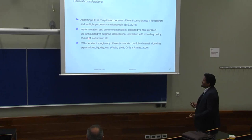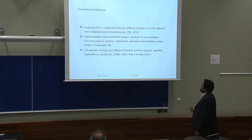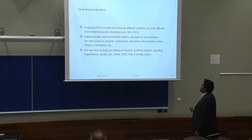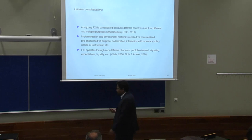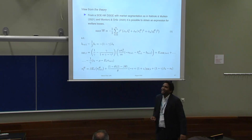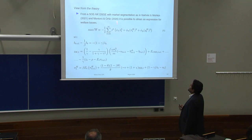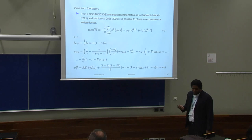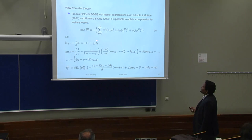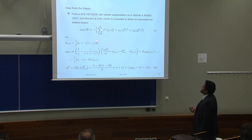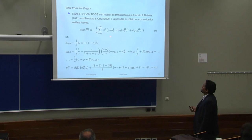Intervention operates through very different channels: the portfolio channel, the signaling channel, the expectation channel, and the liquidity channel. In a small open economy with market segmentation, you can obtain a neat approximation to the welfare function. This is interesting because there's a measure of the Backus-Smith wedge, which captures frictions behind the reasoning for intervention. There are two types of intervention: one I call 'evil intervention,' which manipulates the level of the exchange rate to make the country accumulate foreign assets.